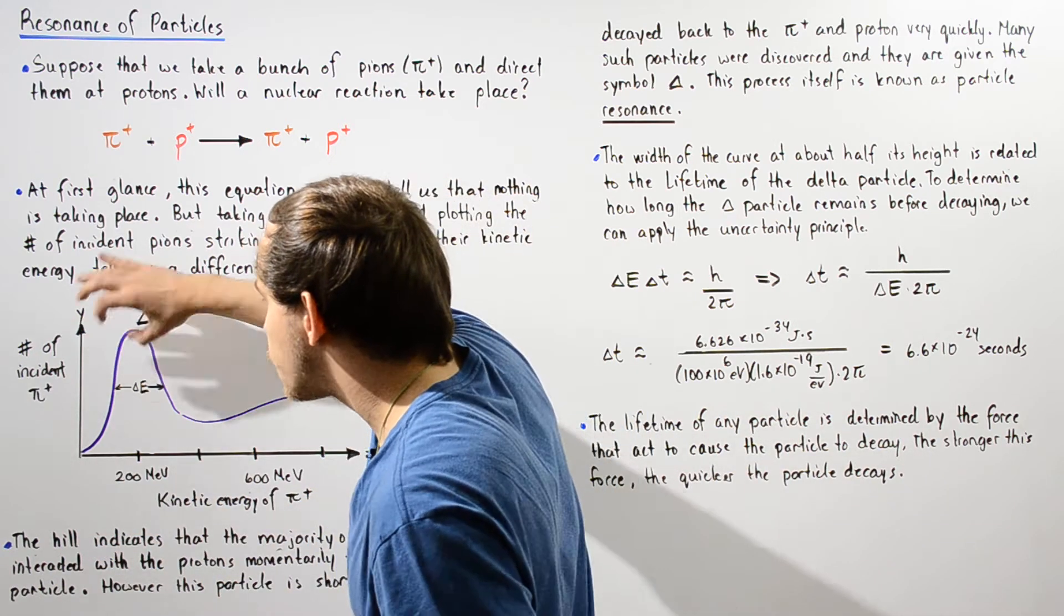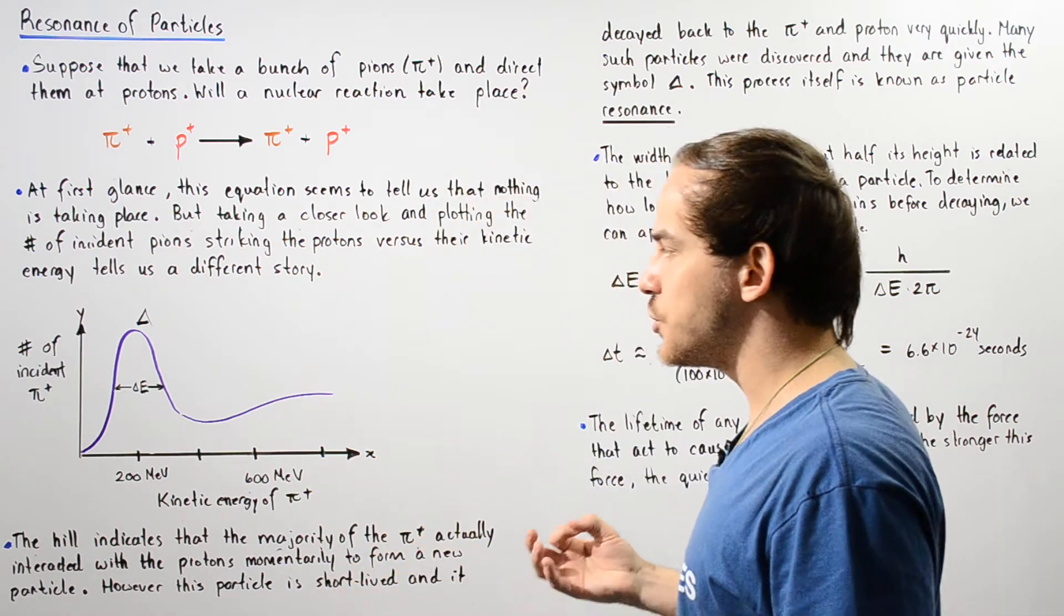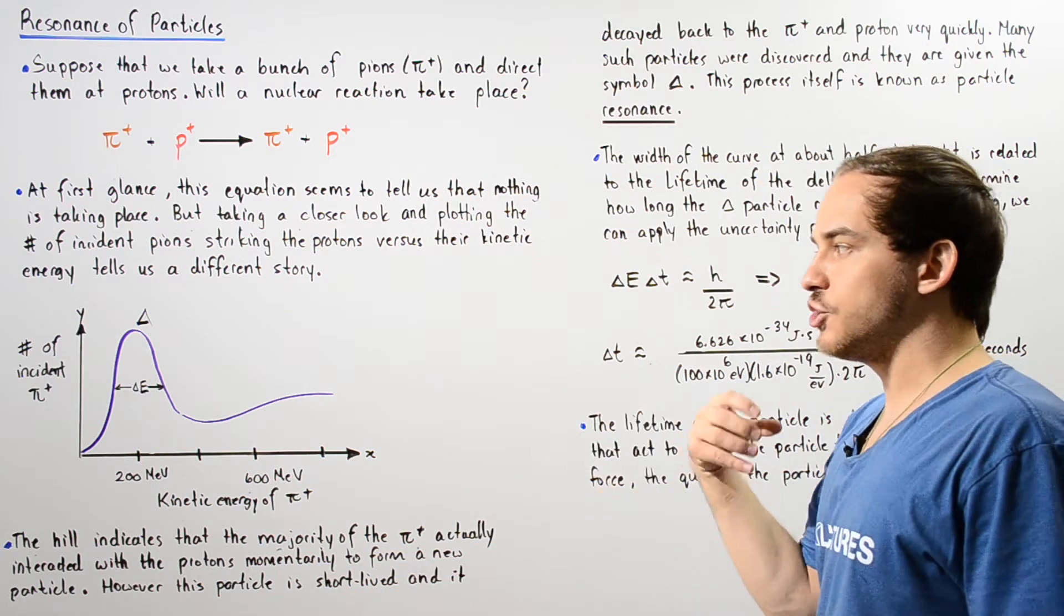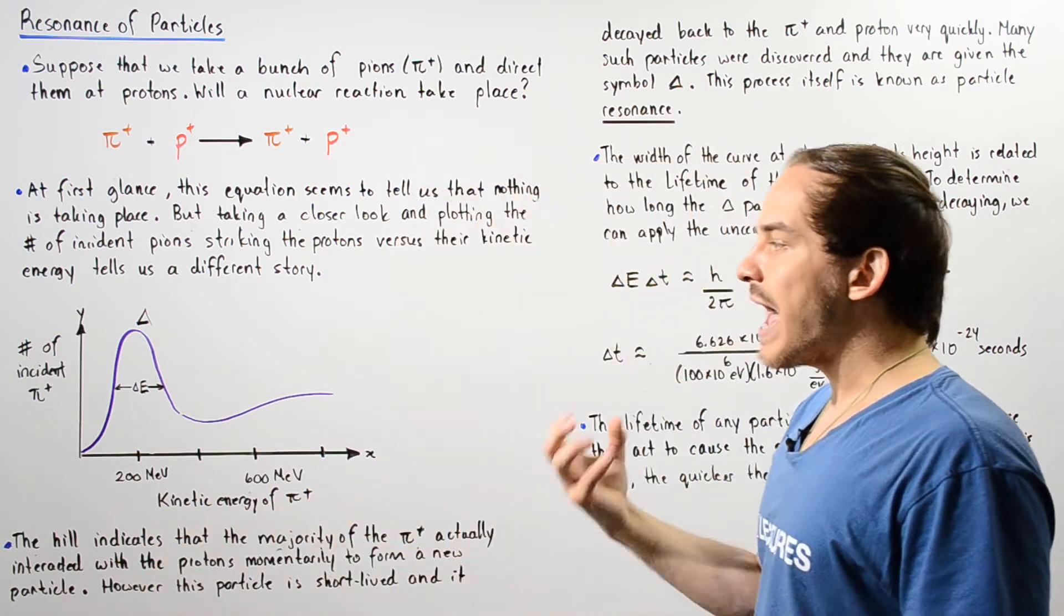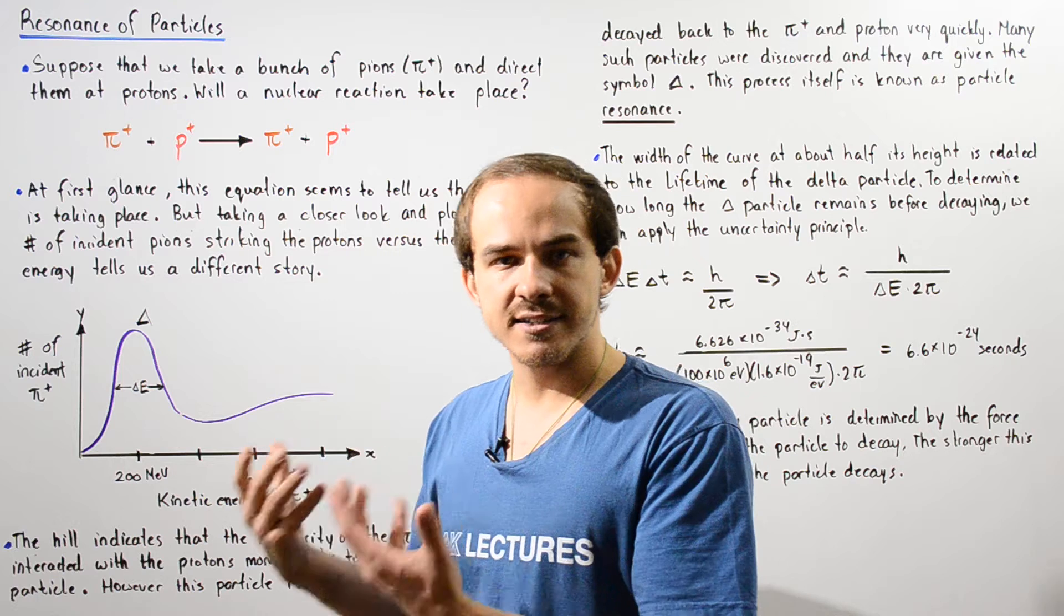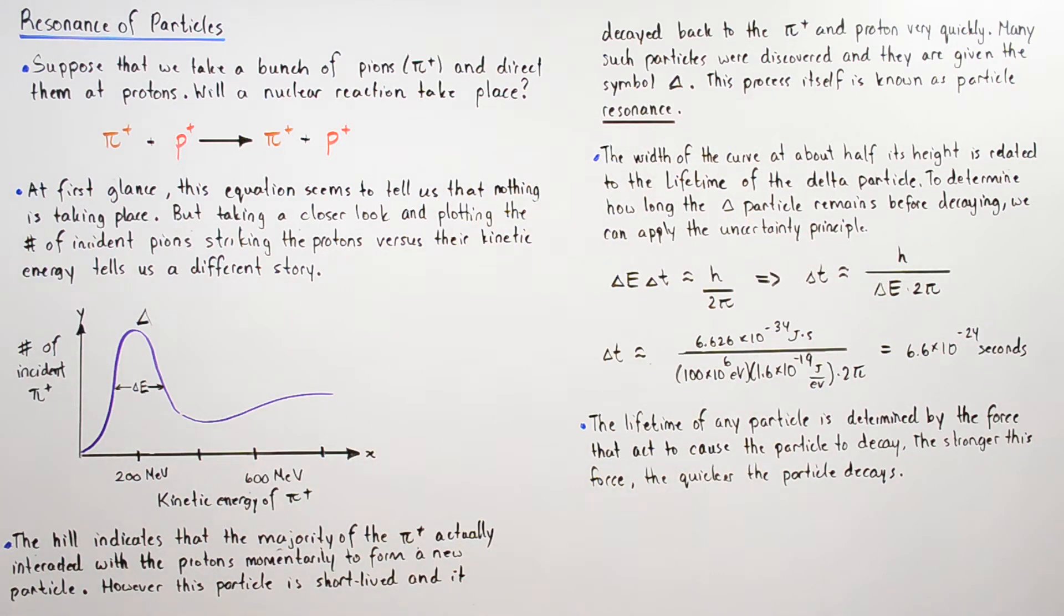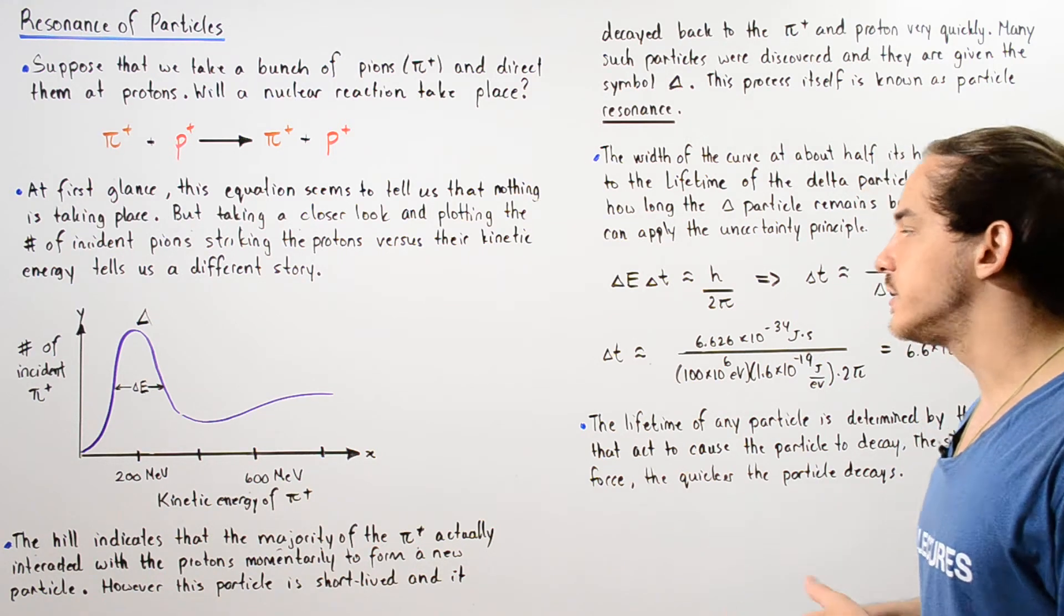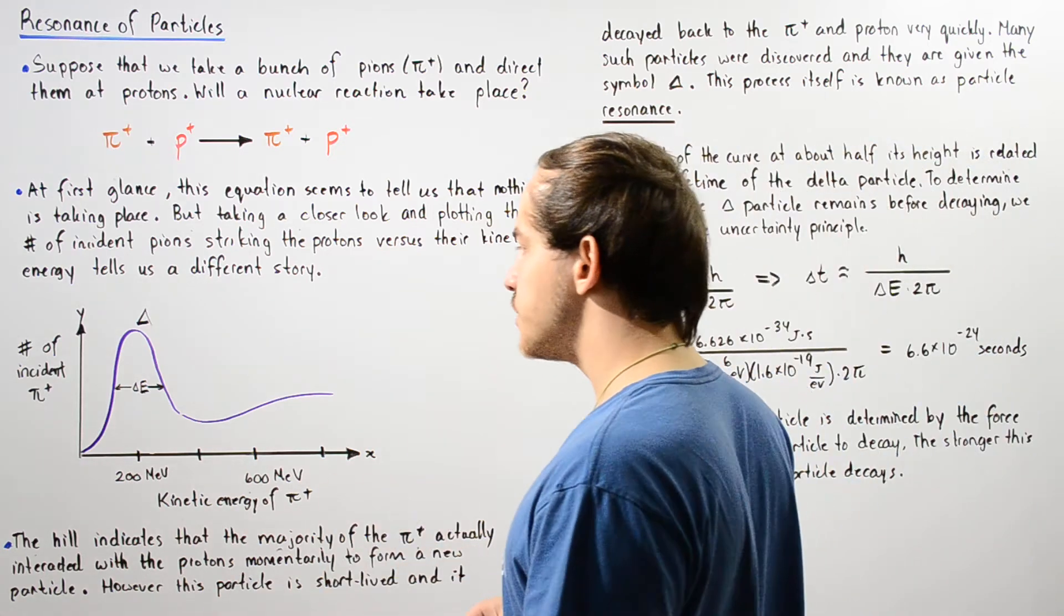So based on this graph, this is about 100 mega electron volts of energy, and using this we can use the uncertainty principle to calculate for how long that particle actually exists. So we see that the width of the curve at about half its height is related to the lifetime of this delta particle, and to determine how long the delta particle remains before decaying, we can apply the uncertainty principle.